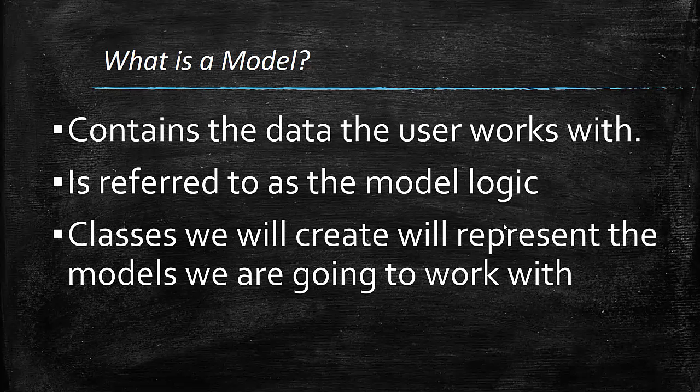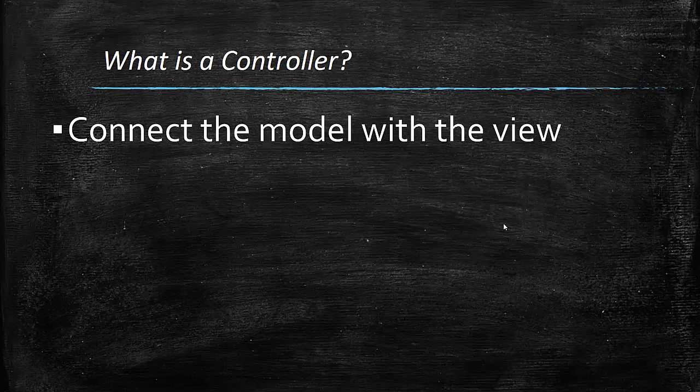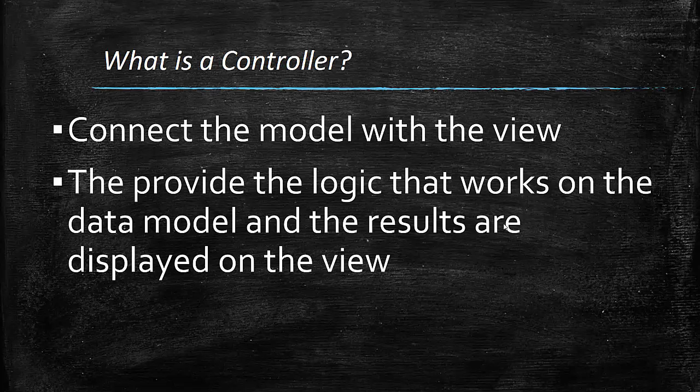A model always interacts with a controller. And a controller is used to connect the model with a view. So a controller will provide logic to our data and the result is shown to a view. For example, in our application, we will have two types of drinks. If we want to see only the alcoholic drinks, then we will have to execute some logic on the whole drinks. And from there, we get only the alcoholic ones. And all this logic will be done by a controller.